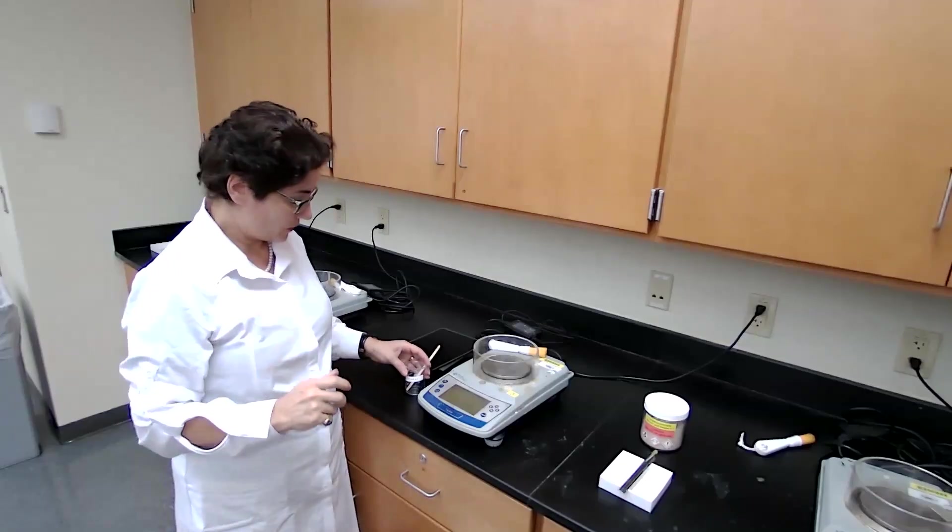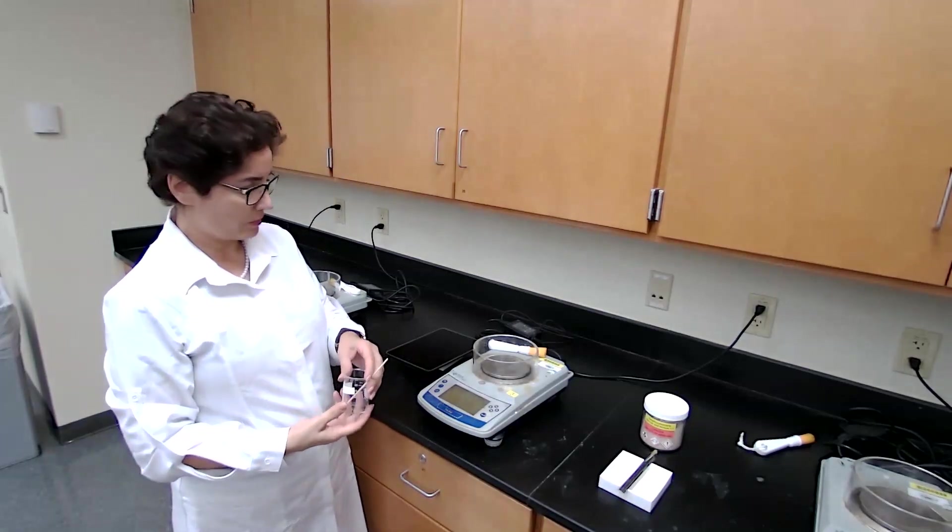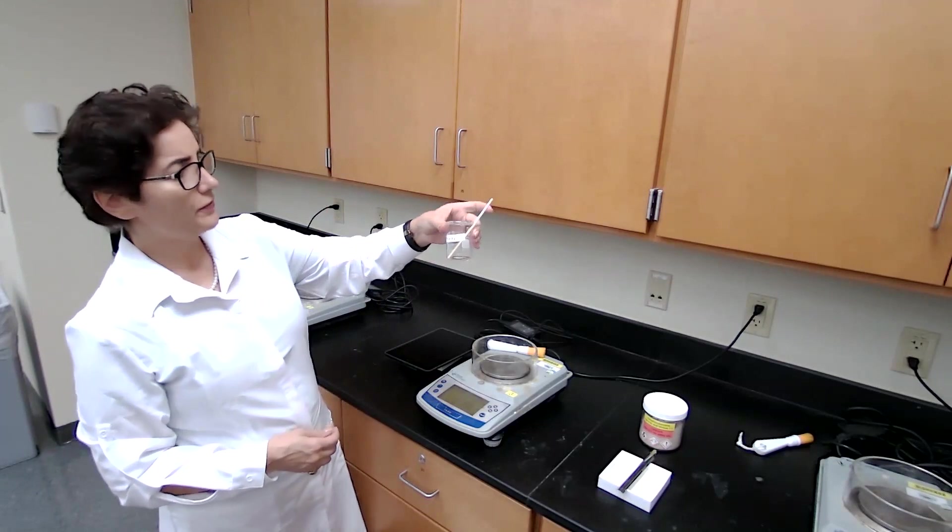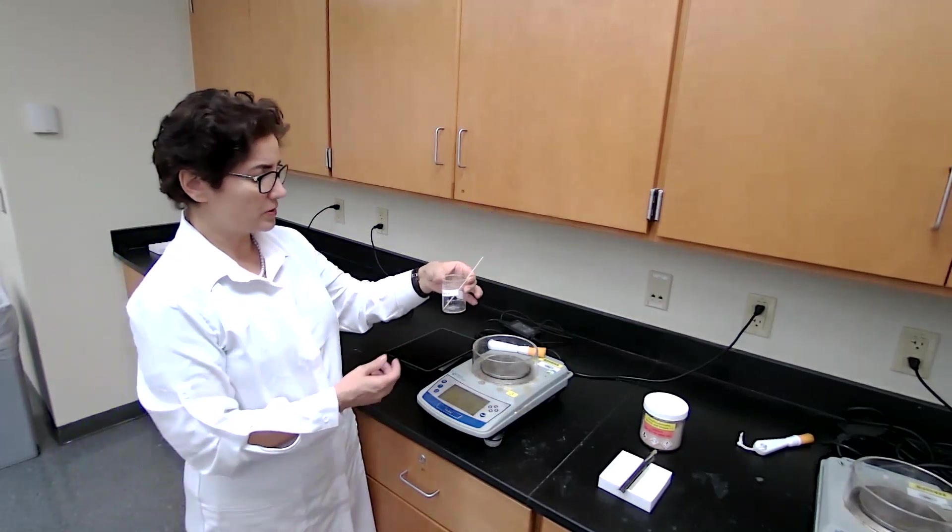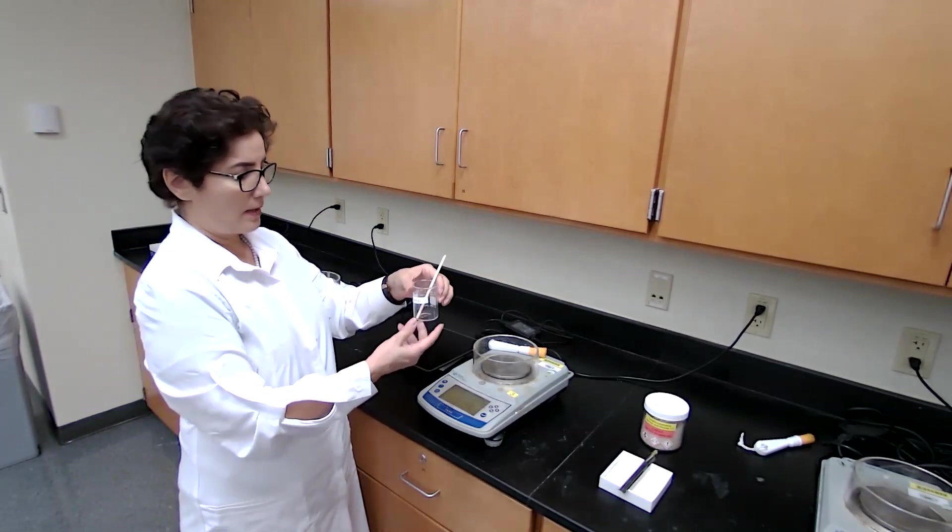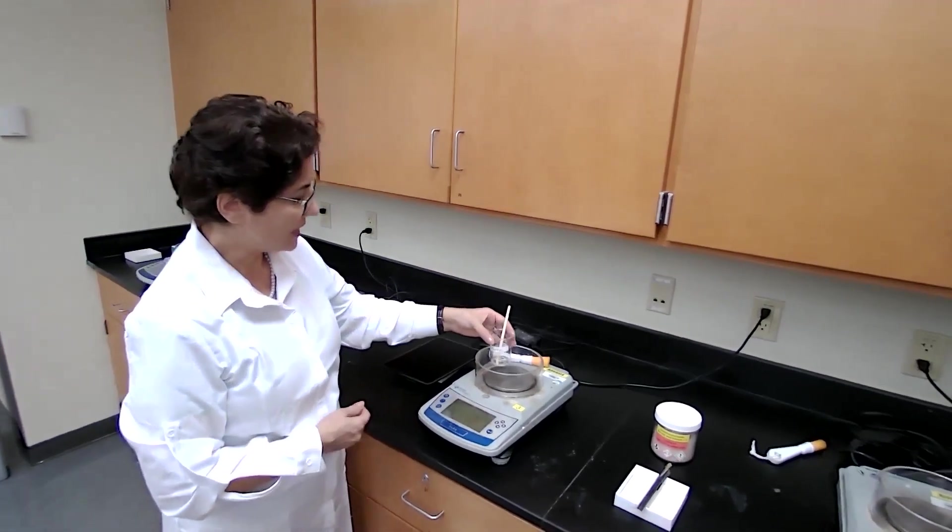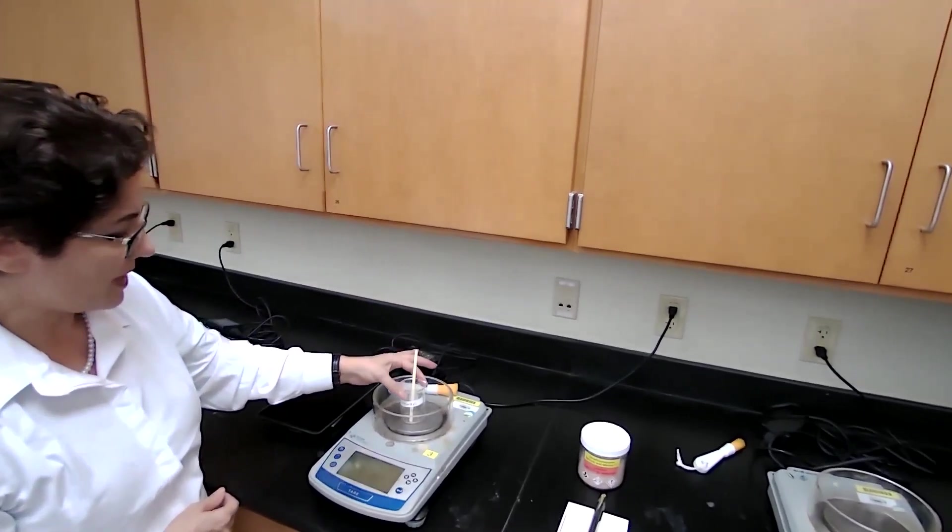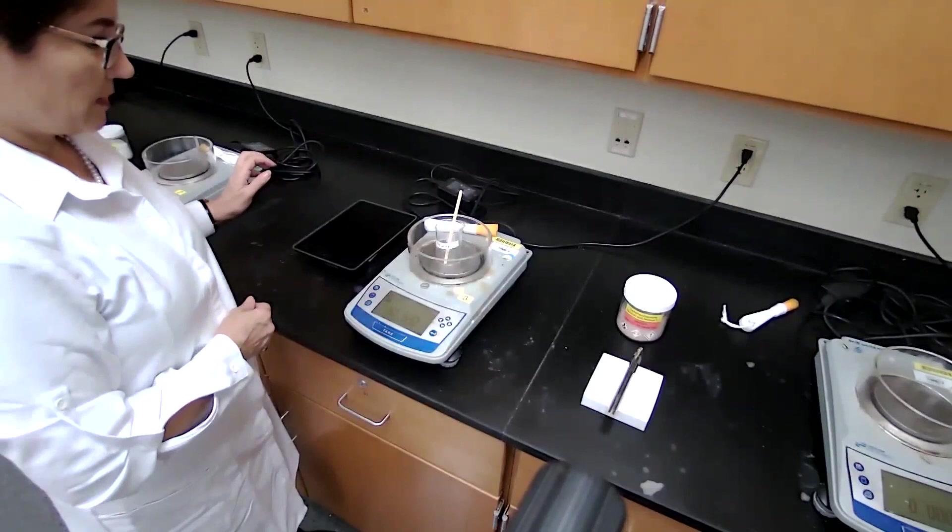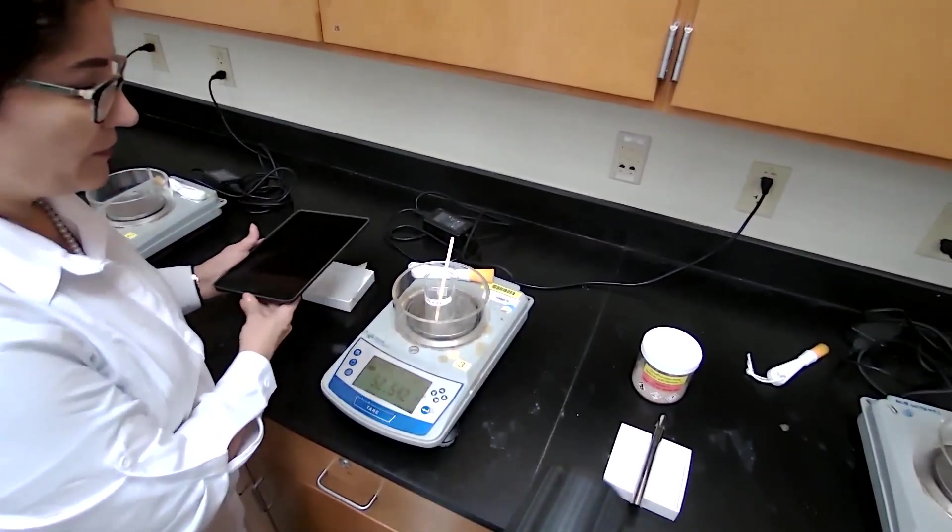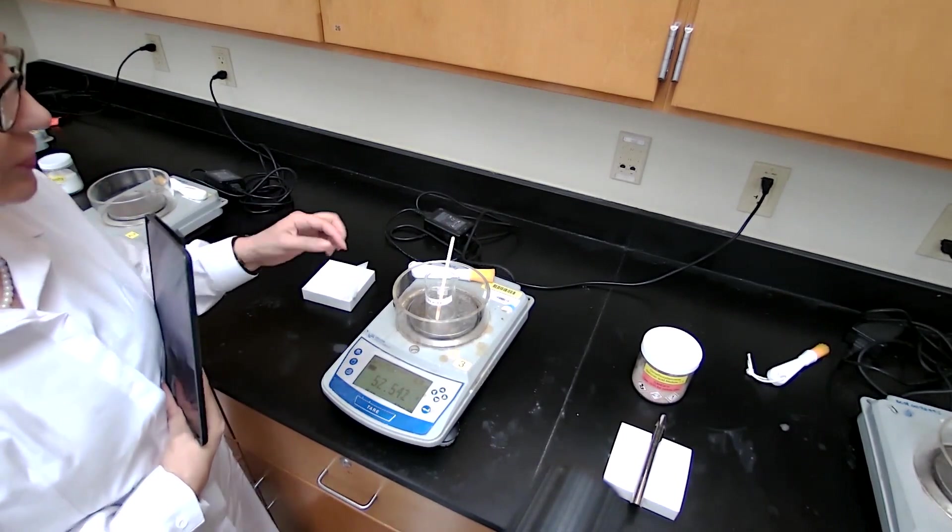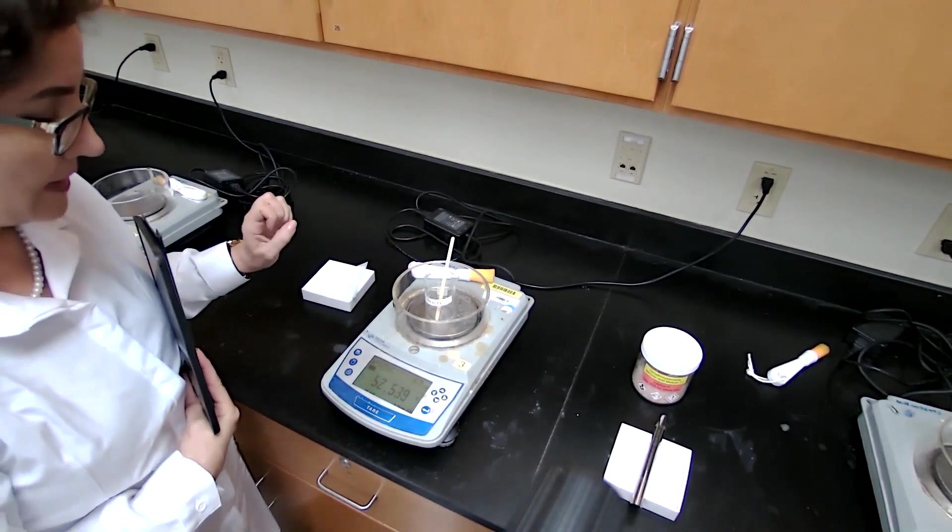While we are waiting for the distillation, we're going to use the time and prepare for the next step. One of the items that needs to be measured is the mass of an empty beaker with a stir bar. This is for one of the last steps, but we do need the mass. So we are going to measure the mass of the beaker. And the final product later on is going to be measured in the same beaker.